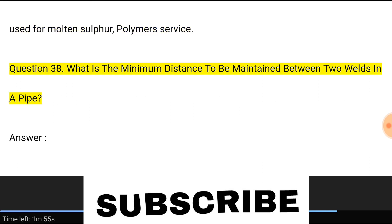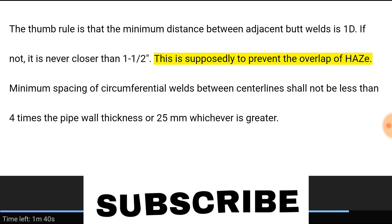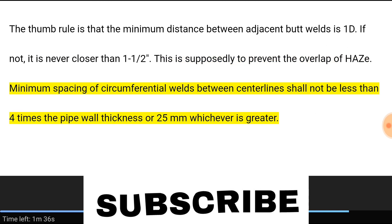Question 38: What is the minimum distance to be maintained between two welds in a pipe? Answer: The thumb rule is that the minimum distance between adjacent butt welds is 1D; if not, it is never closer than 1-1/2 inches. This is to prevent the overlap of heat affected zones. Minimum spacing of circumferential welds between center lines shall not be less than four times the pipe wall thickness or 25 mm, whichever is greater.